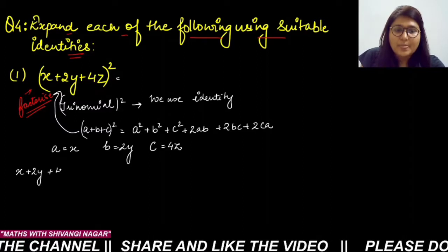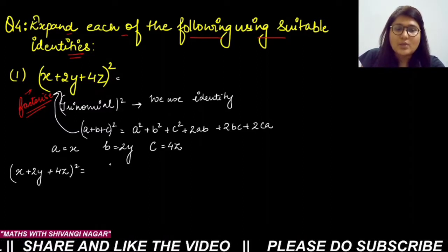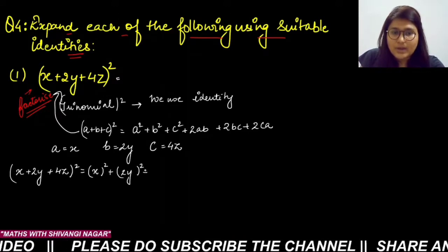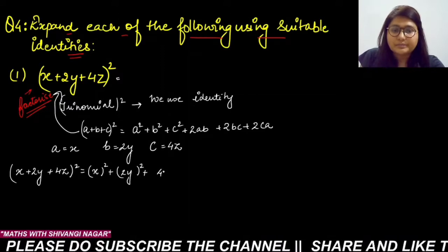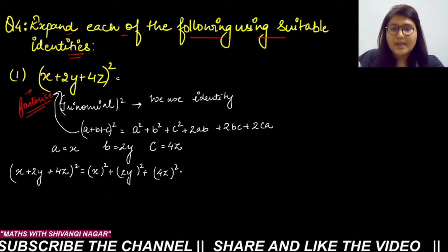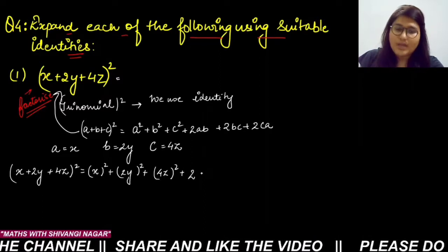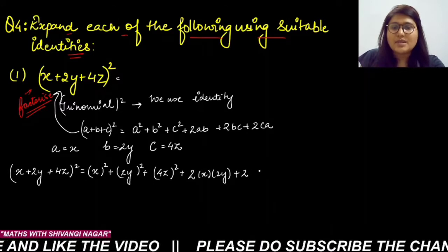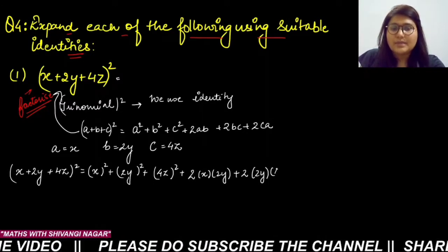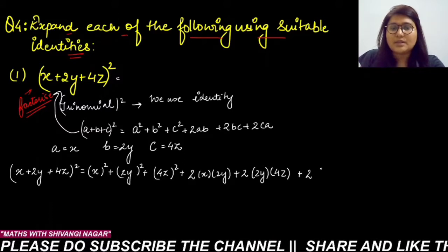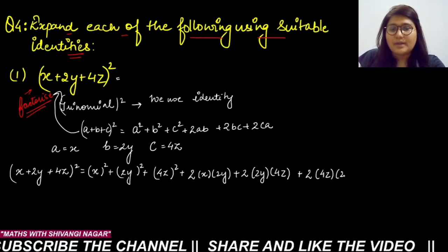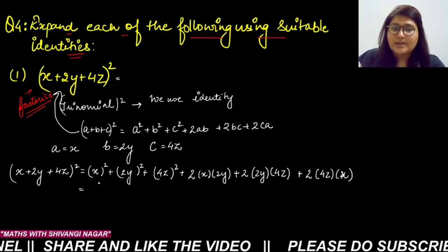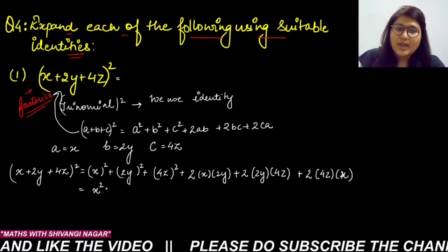So (x + 2y + 4z)² = x² + (2y)² + (4z)² + 2·x·2y + 2·2y·4z + 2·4z·x. This is the right-hand side expansion form.